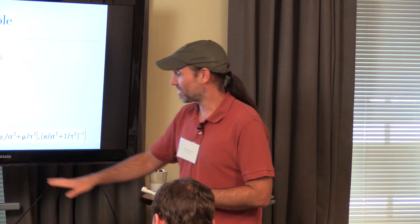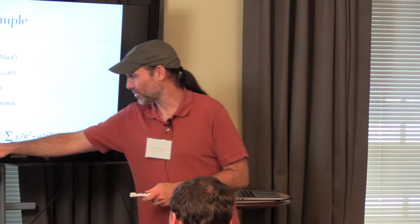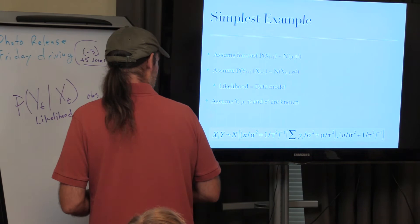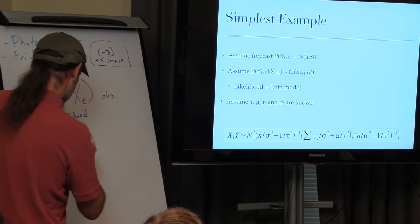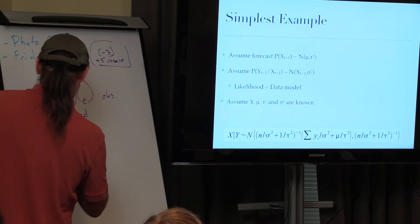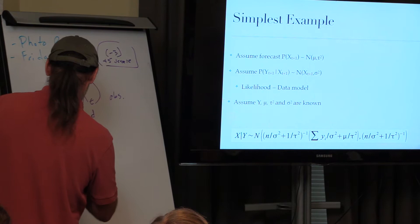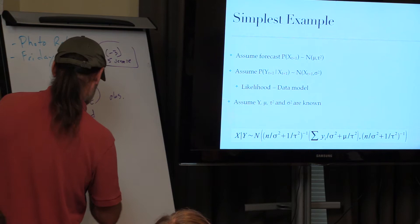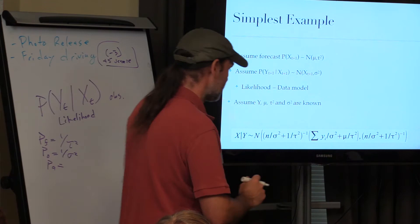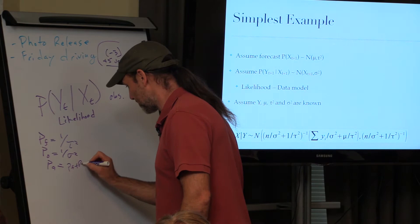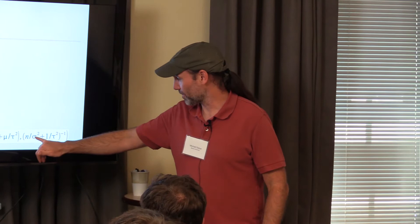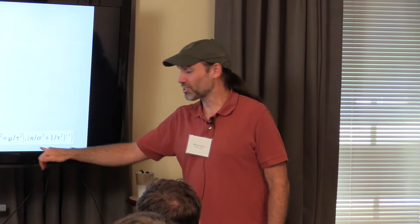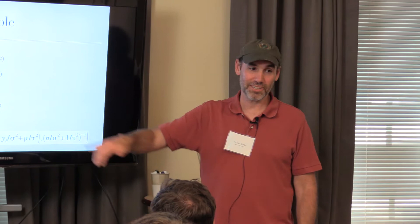This is the actual posterior, but I can recode it in a way that makes it easier to understand. Let's call PF the precision of my forecast: one over tau-squared. Let's call PO the precision of my observations: one over sigma-squared. If I do that, then the precision of my analysis is just the precision of the forecast plus the precision of the observations. This just looks nasty because you're dealing with variances, but if you deal with precisions, all we're doing is adding them together.